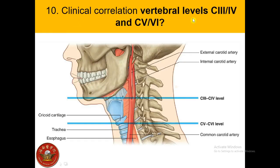Clinical correlation: at the vertebral level between C3 and C4 is the upper margin of the thyroid cartilage, which is also the bifurcation point of the common carotid artery — dividing into the internal and external carotid arteries. The internal carotid artery gives no branches in the neck and goes directly into the cranial cavity to supply the brain, eye, and orbit. The external carotid artery supplies the rest of the neck, face, and head. The level between C5 and C6 marks the lower limit of the pharynx and larynx, and the superior limit of the trachea and esophagus.